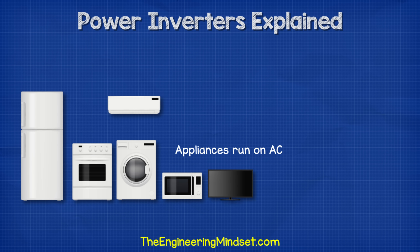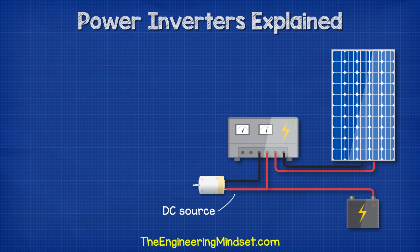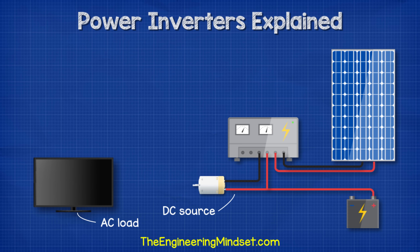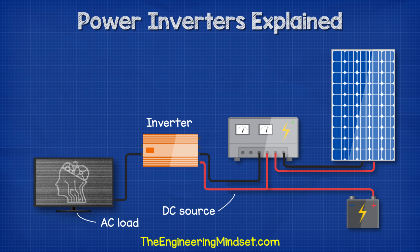The appliances in our homes are designed to run off of an AC supply, and they get that from the electrical outlets which all provide AC electricity. However, electricity produced by things such as solar panels and batteries produce DC electricity. So if we want to power our electrical devices from renewable sources, battery banks, or even our car, then we need to convert DC electricity into AC electricity, and we do that with an inverter.